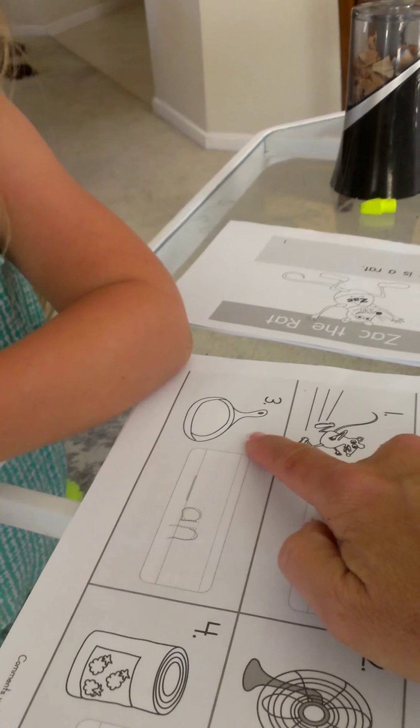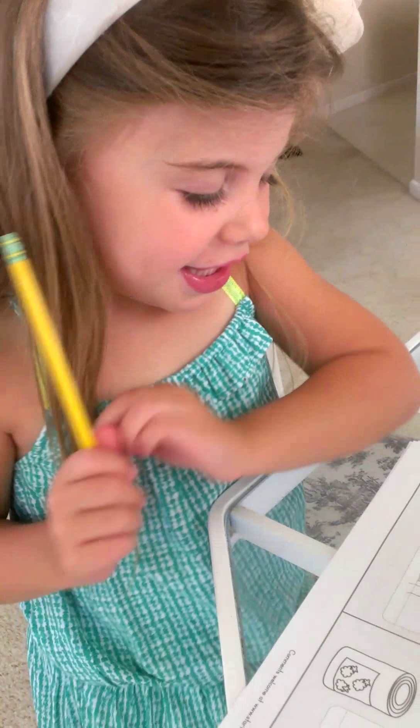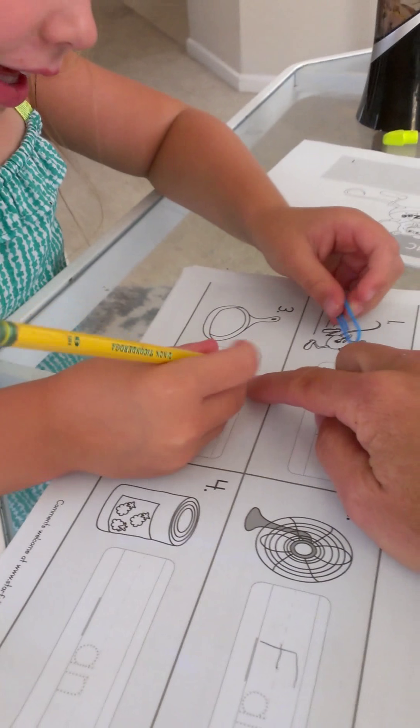Peyton, what is this a picture of? Pan. And they already gave us the 'an,' so what's the beginning sound of pan? P. Can you read the word for me now?